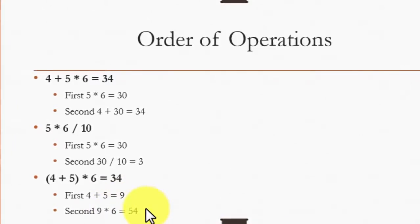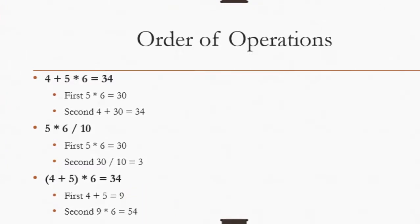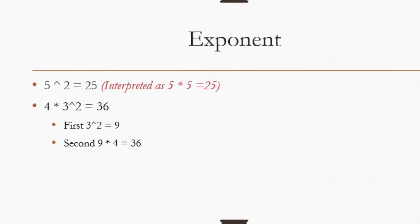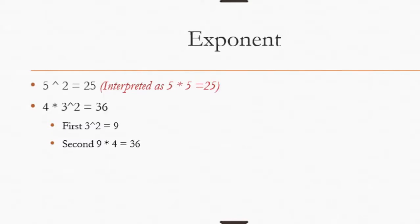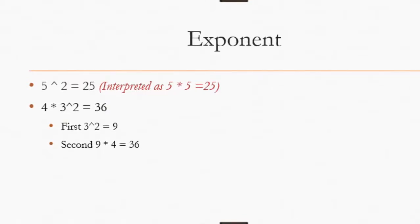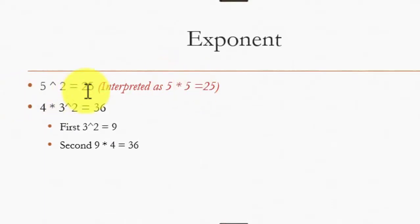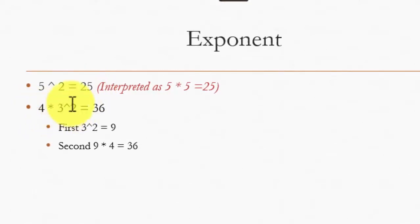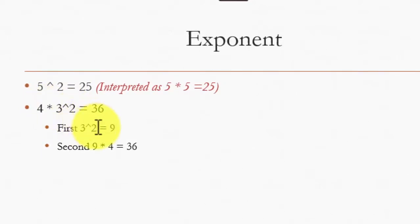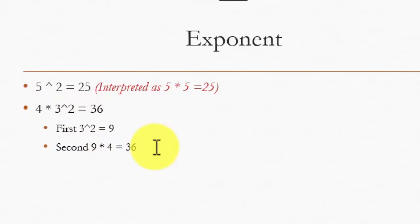The order of operations that you have learned in your math classes still holds true. Now let's come down to exponents. Exponent, which is the second one in line, is done with the help of this caret symbol, which can be produced if you press and hold the shift key and press number 6 on your keyboard. So here we have 5 ^ 2, which is interpreted as 5 × 5. So it is 5 squared. The answer is going to be 25. If exponent comes in a mixed operation, then exponent takes precedence over multiplication because it's a higher order operator. So here 3 ^ 2 will equal 9 and then the result will be multiplied by 4 to give you the answer 36.